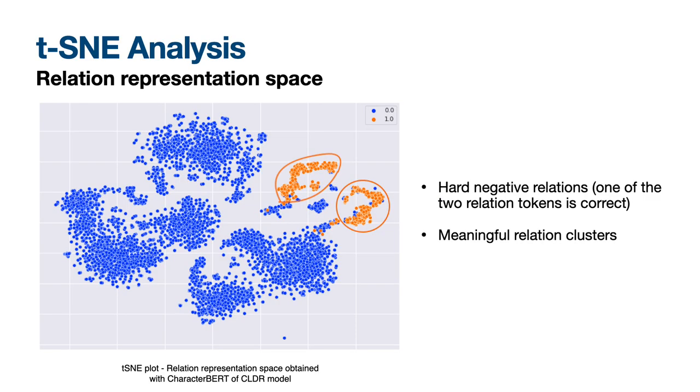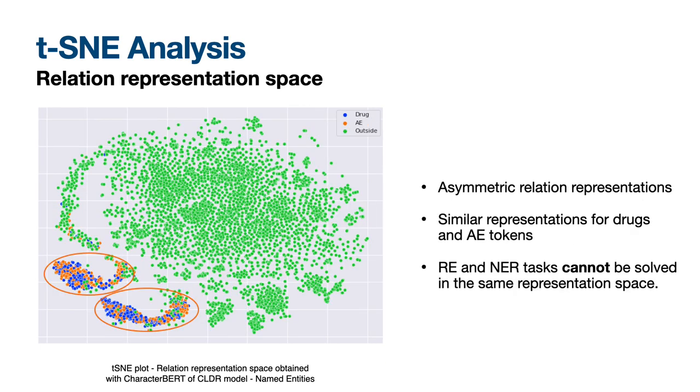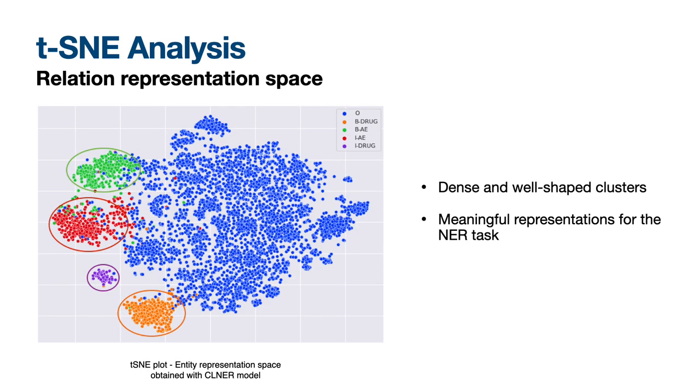In order to further explore the learned representations, we perform a t-SNE analysis. Using the tuned CharacterBERT of the CLDR model, we create the latent space of the relations. We can clearly detect well-shaped clusters of the relations. As we learn representations in an asymmetric way, we can't solve the relation extraction and named entity recognition tasks in the same space. That's why we implement the CLDR+ model, and learn meaningful representations for the named entities.